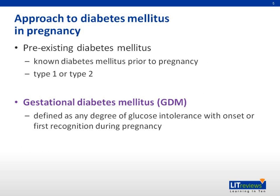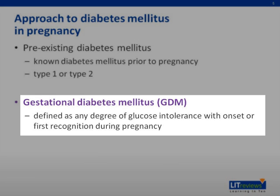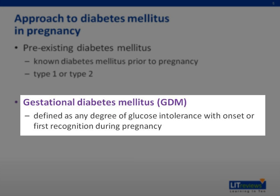Diabetes mellitus in pregnancy may be divided into pre-existing diabetes mellitus, as well as gestational diabetes mellitus. Pre-existing diabetes mellitus is diagnosed prior to pregnancy and may be type 1 or type 2. Gestational diabetes mellitus is defined as any degree of glucose intolerance with onset or first recognition during pregnancy.